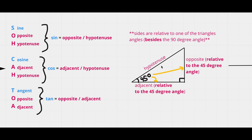To evaluate cos 45, we take the 45-degree angle, locate the adjacent side (the base) and the hypotenuse, and divide the adjacent side by the hypotenuse. These sides are always relative to one of the triangle's non-right angles — you cannot use the 90-degree angle as your reference angle.